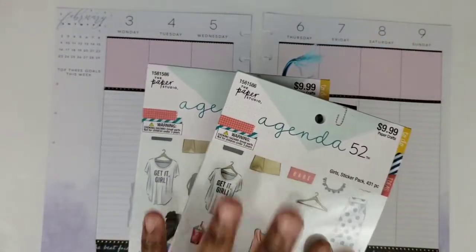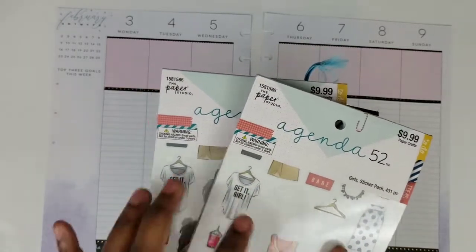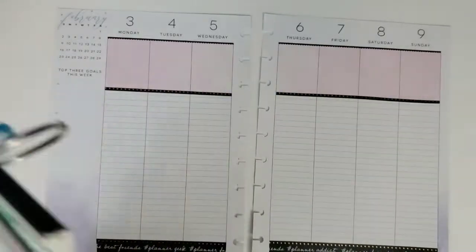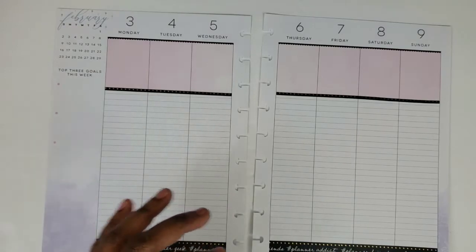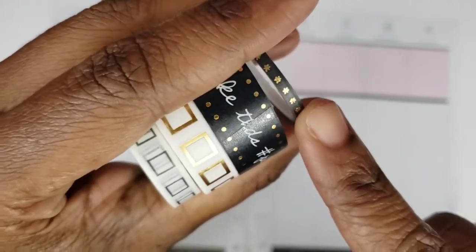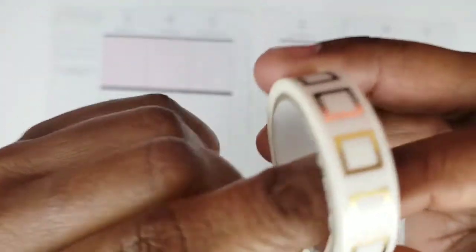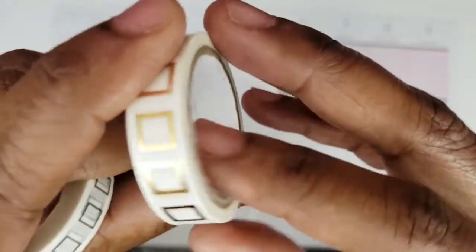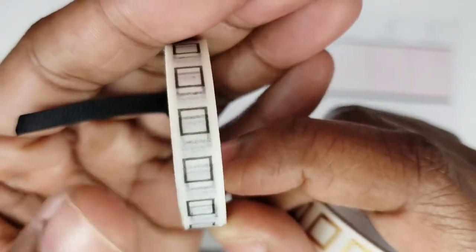I'm using some Agenda 52. Sherry over at Sherry Black Dog Designs inspired me to pull these out again and use these. I am also using several washis. I've already put down these two. This is Happy Planner washi. This is Capital Chic washi. This is also Capital Chic washi and I'm going to be using it as a checklist and this came from my last Live Love Inspire box.